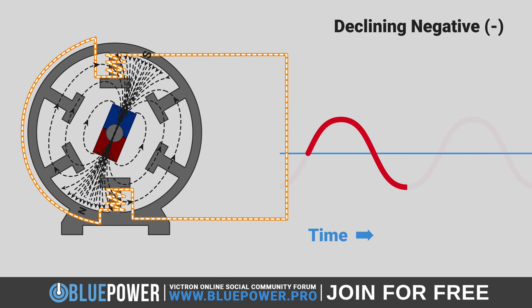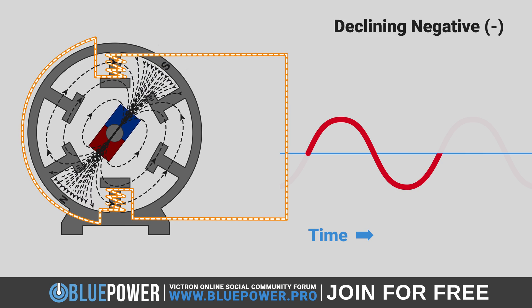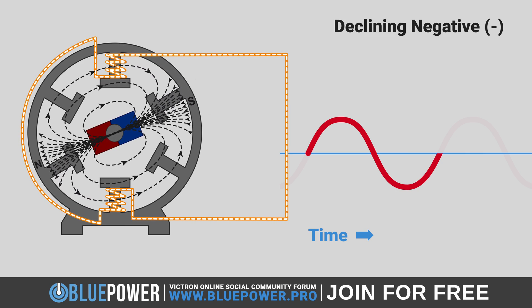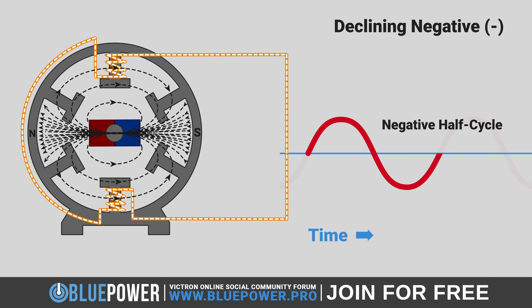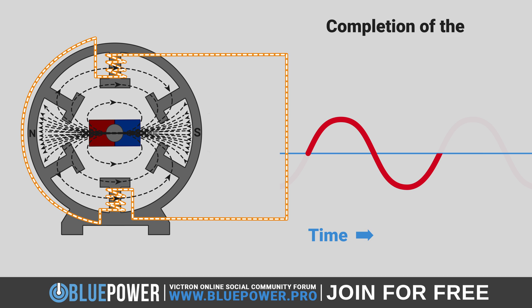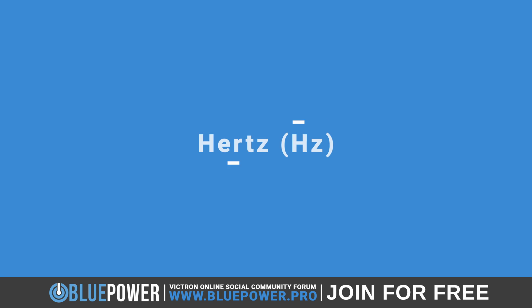After reaching the maximum negative voltage, the magnetic field's influence begins to wane. As the magnet rotates further and approaches the next transitional zone, the negative voltage decreases, moving back up towards zero. This transition completes the negative half cycle of the sine wave. When the magnet's next transitional zone aligns with the coils again, the system is back at its starting point — this is known as a full cycle. We measure these sine wave cycles in the unit of Hertz, or Hz for short.